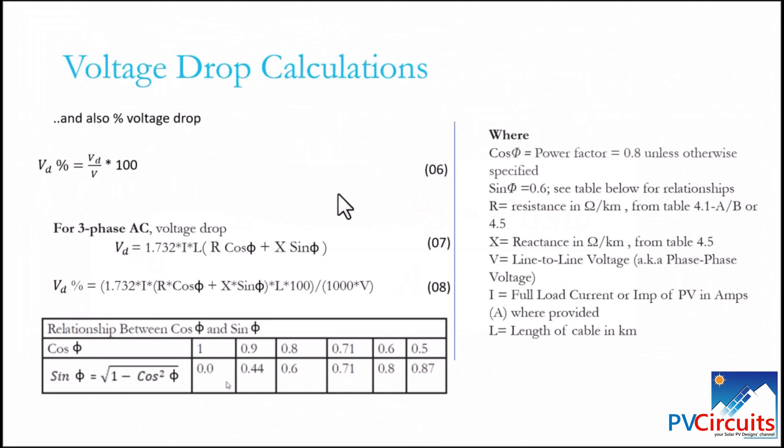For three-phase AC, however, the equation for voltage drop is expressed as in equation 07. The same terms remain the same for that equation and voltage drop is expressed as in equation 08. This table, as I said earlier, gives you the relationship between cos phi and sin phi. So that when power factor is 1, this part of the equation is 0.